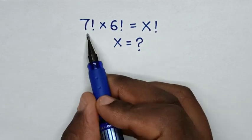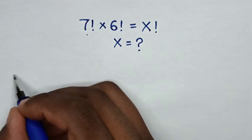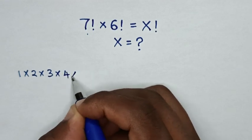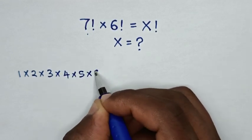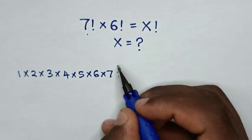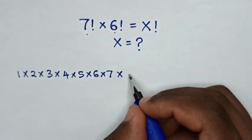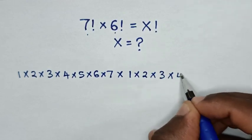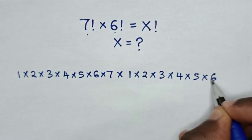So, 7 factorial is same as 1 times 2 times 3 times 4 times 5 times 6 times 7. Then, times 6 factorial is same as 1 times 2 times 3 times 4 times 5 times 6.